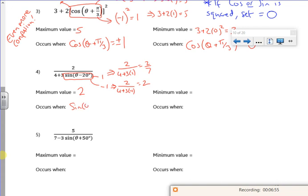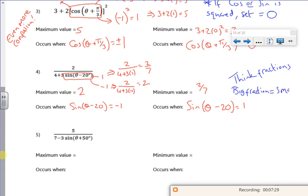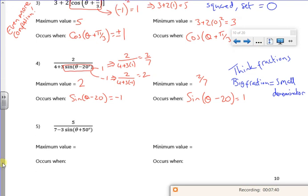And the smallest number of the fraction is when you have the biggest number on the bottom. So my maximum value is 2, and that happens when sine of theta minus 20 is minus 1, because you wanted the smallest value on the bottom to make the value of the fraction big. And that's 2 over 7, because you want to make it as small as possible by making the bottom as big as possible. Proper rounder. So you've got to think fractions of this one. Big fraction, small denominator. This is nice, it's really nice to think about it.